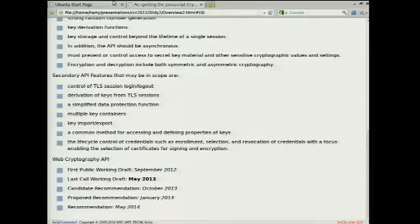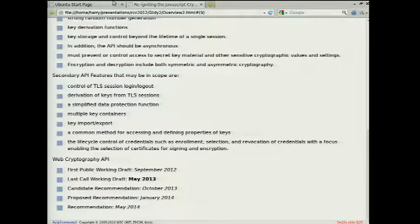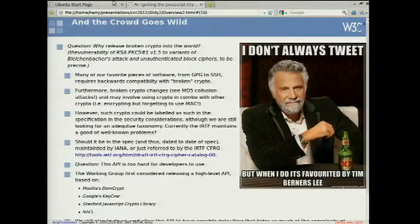There's a lot of stuff which we're thinking about covering, of which we have not done because we just only have so much time. Control of TLS session login and logout is not done consistently across browsers. Derivation of keys from TLS sessions would be great. Channel binding. Generally a good idea. I would recommend people look at the origin bound key work of Dirk Balfanz and others. Trying to make things simple. Simplified data protection functions. Multiple key containers. Key import export. We are working on right now. Common methods for accessing and defining properties of keys. That's still being worked on. And client cert. That's possibly a whole other API which we won't get to any time soon. And we have a very tight time schedule.